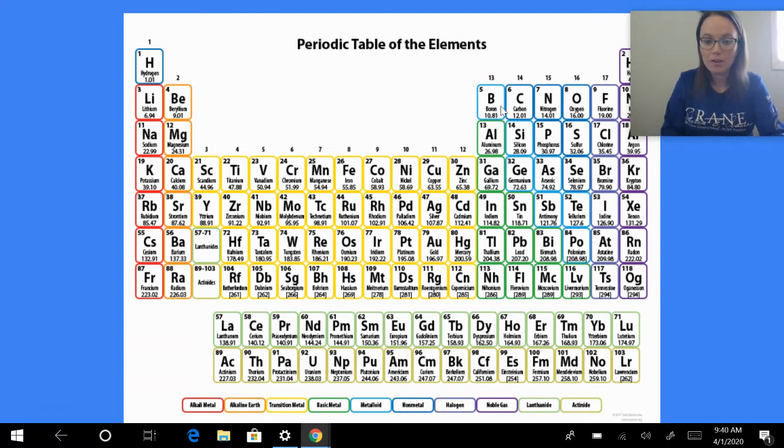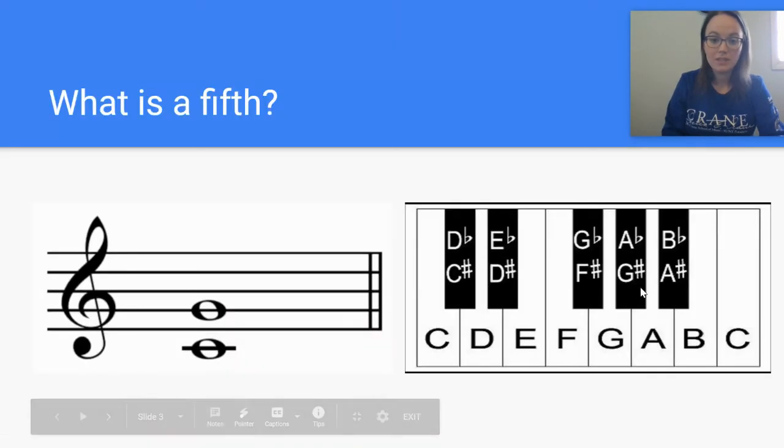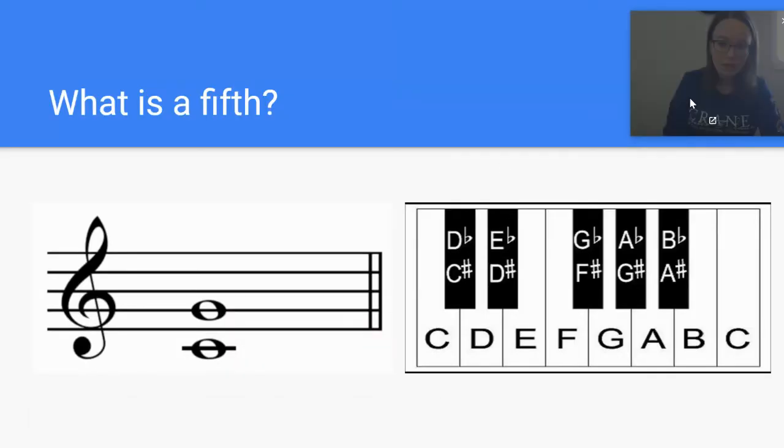For example, before we made the periodic table, carbon had already been discovered. We knew the atomic weight. We knew many of the characteristics of it. So it's not that looking at this helps you discover elements. They were already discovered and this is a way of organizing them. The circle of fifths works in the same way.